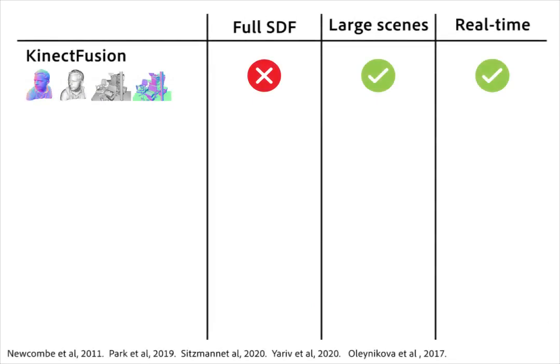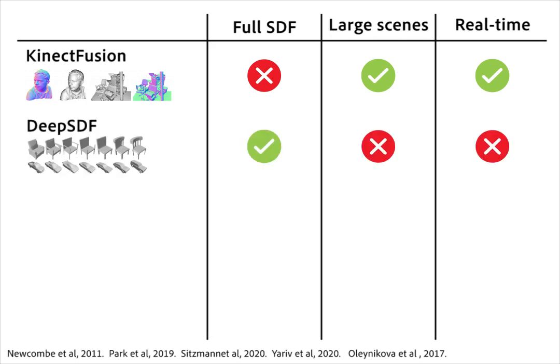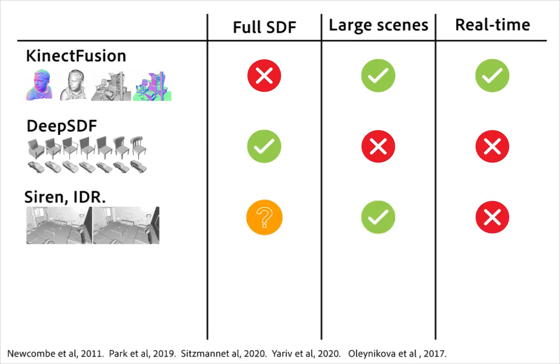Although truncated signed distance fields are common in SLAM systems such as KinectFusion, reconstructing full non-truncated signed distance fields for room-scale environments is challenging. A simple depth fusion gives large errors. Other related works have tackled reconstructing full SDFs for objects or for larger scenes, however these methods are not real-time.